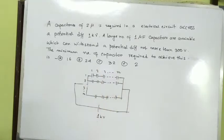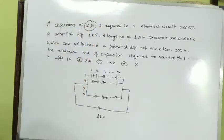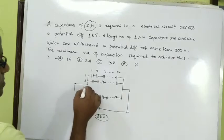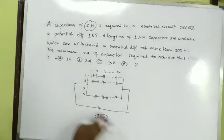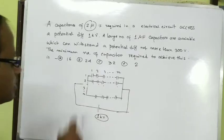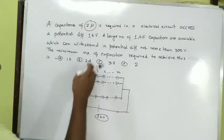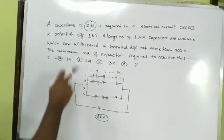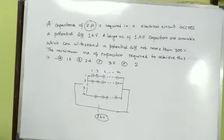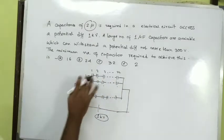For the series connection, the total voltage is the sum of individual voltages across each capacitor. The series combination will have the total potential difference distributed. Each branch needs to handle the full voltage.